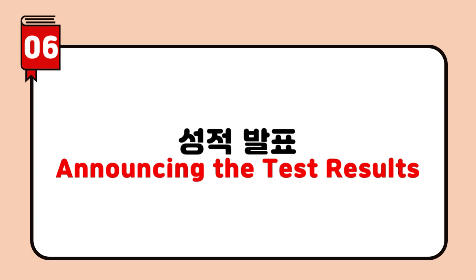성적표 및 성적 확인. Your exam results have come out. I'll let you know the test results. Your test results will come out today. You'll get your listening test results in the afternoon. I'll give out your report cards. Please check your score. Please check whether your result is correct. See if there's anything wrong with your test score. Is there anyone who thinks there's something wrong with the result? If you think the score is wrong, please come to me. Get your parents to sign the report card and bring it back to me.